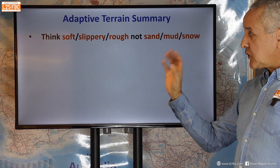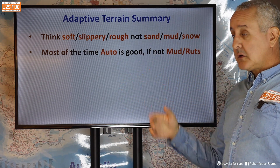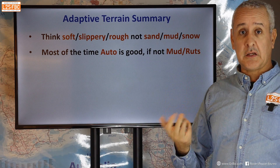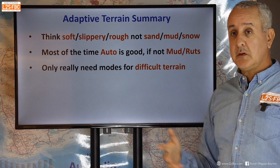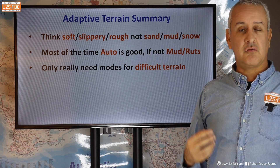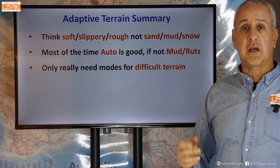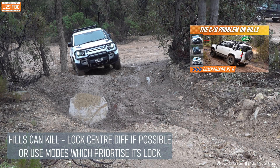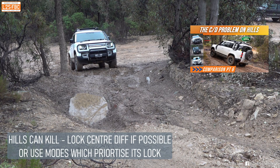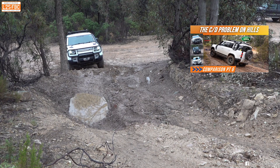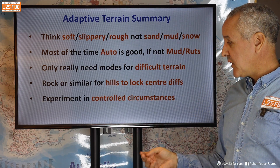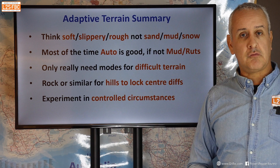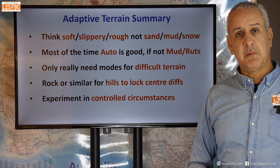Summary: think soft, rough, and slippery — not sand, mud, and snow. Most of the time, auto or normal mode is absolutely fine off-road, and mud and ruts can be a useful default. Reserve specific modes for tougher terrain like really deep sand. Always use rock mode for difficult hills, because you want to lock up that center differential or clutch as much as possible — that's an important safety issue. Experiment in controlled conditions: drive the same obstacle in different modes and see how the vehicle reacts.